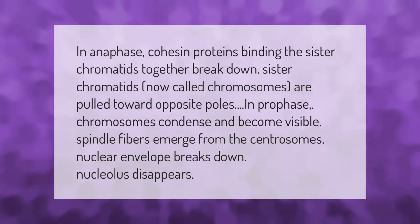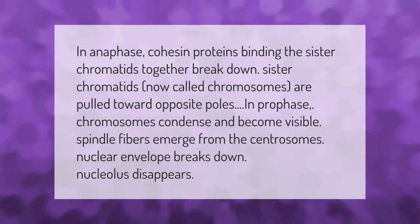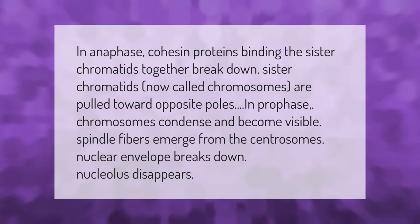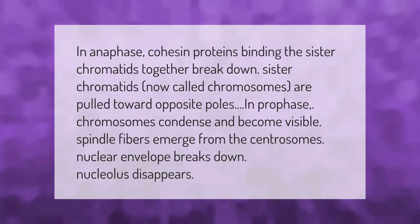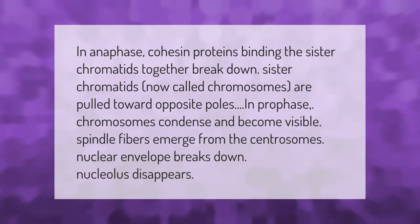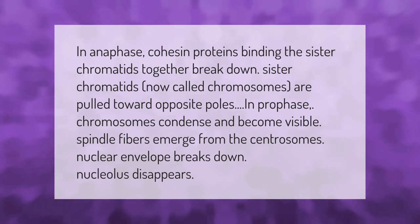In anaphase, cohesin proteins binding the sister chromatids together break down. Sister chromatids, now called chromosomes, are pulled toward opposite poles. In prophase, chromosomes condense and become visible, spindle fibers emerge from the centrosomes, the nuclear envelope breaks down, and the nucleolus disappears.